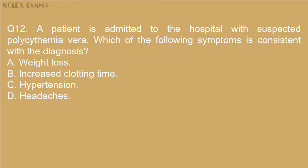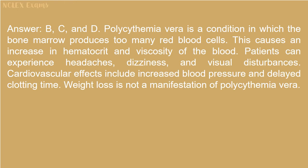Question 12: A patient is admitted to the hospital with suspected polycythemia vera. Which of the following symptoms is consistent with the diagnosis? A. Weight loss. B. Increased clotting time. C. Hypertension. D. Headaches. Answer: B, C, and D. Polycythemia vera is a condition in which the bone marrow produces too many red blood cells, causing an increase in hematocrit and viscosity of the blood. Patients can experience headaches, dizziness, and visual disturbances. Cardiovascular effects include increased blood pressure and delayed clotting time. Weight loss is not a manifestation of polycythemia vera.